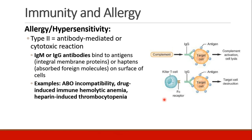Type 2 reactions are called antibody-mediated or cytotoxic reactions, usually due to IgM or IgG antibodies. They will bind to an antigen or a hapten which is on the surface of a cell. Here we can see some examples — here's a target cell with its antigens, the IgG binds to it, complement then finds the bound IgG and activates, leading to destruction of the cell. Or, instead of complement, a killer T cell could identify the bound IgG and lead to destruction of the target cell. Examples include destruction of blood cells during incompatible transfusion, drug-induced immune hemolytic anemias, or heparin-induced thrombocytopenia, where the platelets become the target cells.